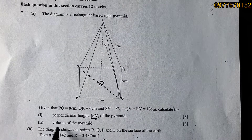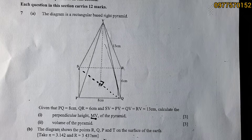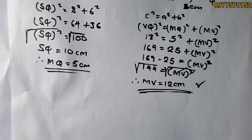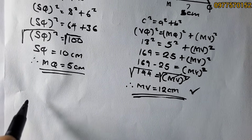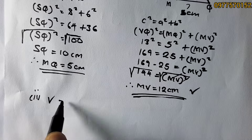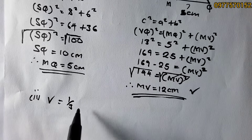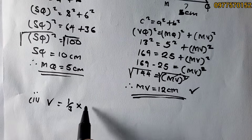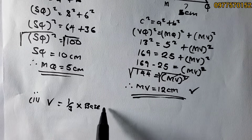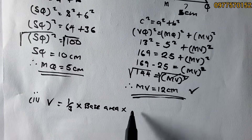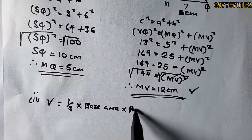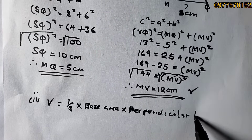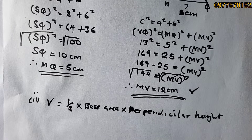Now for part (ii): calculate the volume of the pyramid. The volume formula is: V = ⅓ × base area × height. This height must be the perpendicular height.